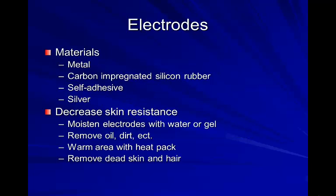Electrodes can be made from various materials. Back in the old days they had sheet metal electrodes that required a wet sponge. They also had carbon-impregnated silicone rubber, a black rubber pad that comes in various sizes — again requiring ultrasound gel or a wet sponge. Then you have the silver self-adhesive sticky pads, which are commonly used today.